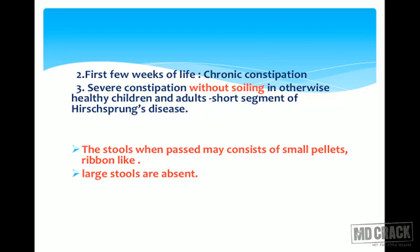In the first few weeks of life, the patient presents with chronic constipation. In otherwise healthy children and adults, there is severe constipation without soiling, with a short segment of Hirschsprung's disease. The stool when passed may consist of small pellets or ribbon-like stools, but large stools are absent.